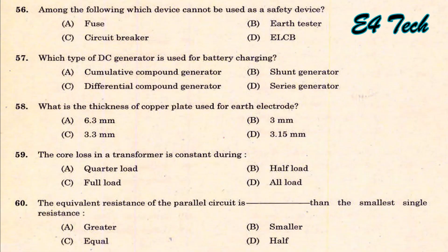Among the following devices, which cannot be used as a safety device? Safety devices include fuses, circuit breakers, ELCB, and BLM. A tester cannot be used as a safety device. That is option B.